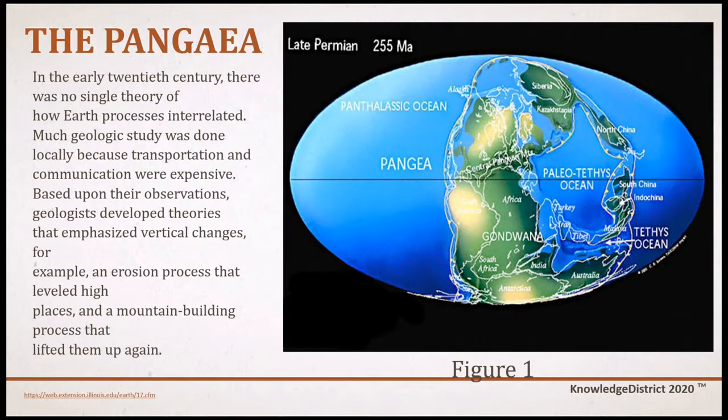Let us learn more about how plates move. In the early 20th century, there was no single theory of how Earth processes interrelated. Much geologic study was done locally because transportation and communication were expensive. Based upon their observations, geologists developed theories that emphasize vertical changes — for example, an erosion process that leveled high places and a mountain building process that lifted them up again.